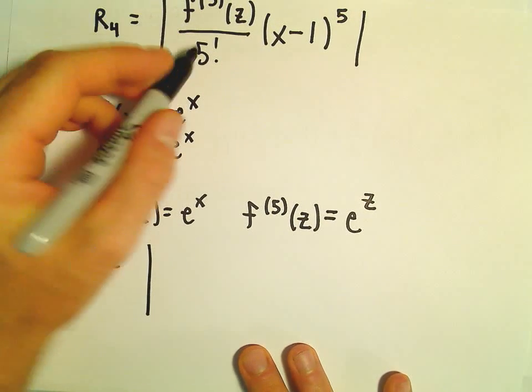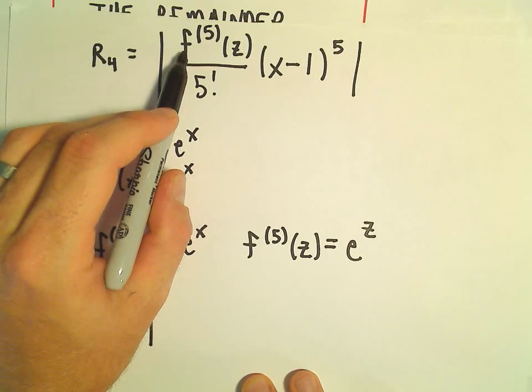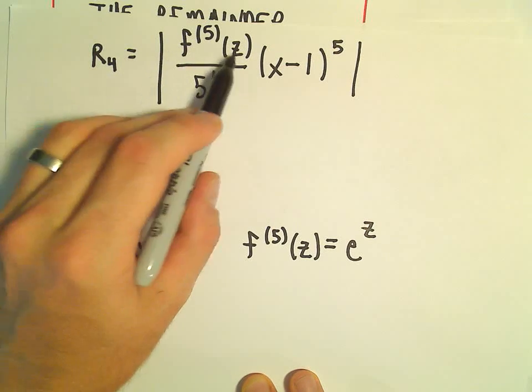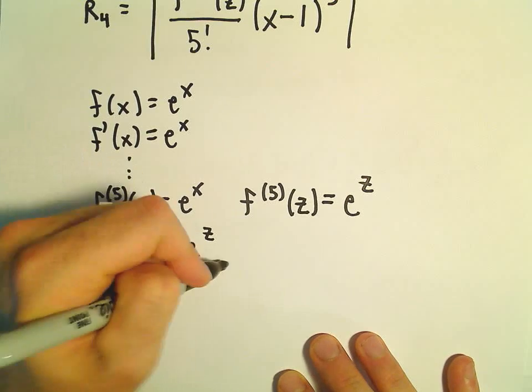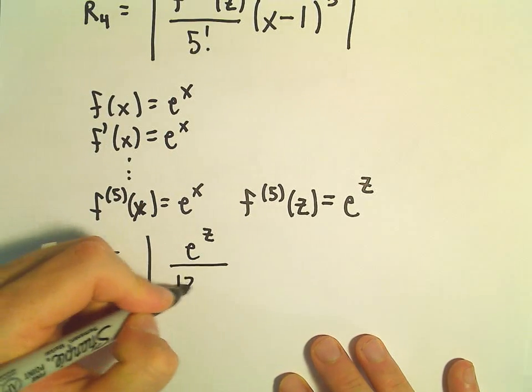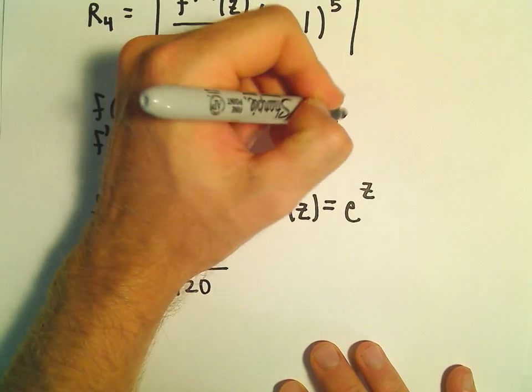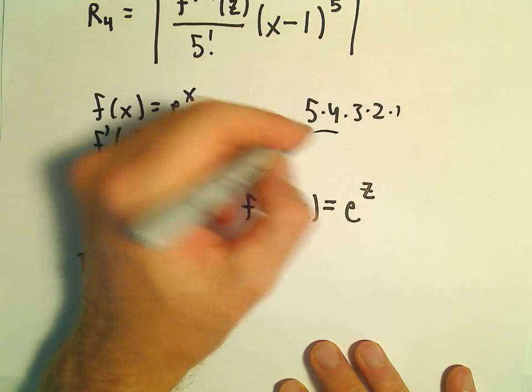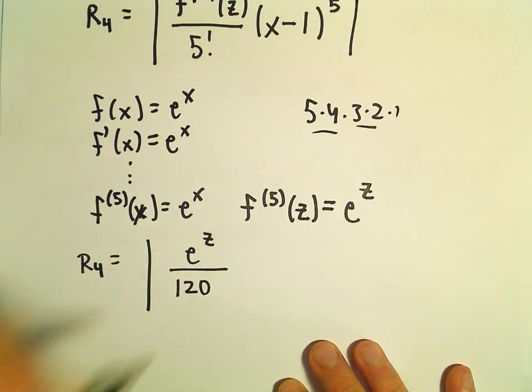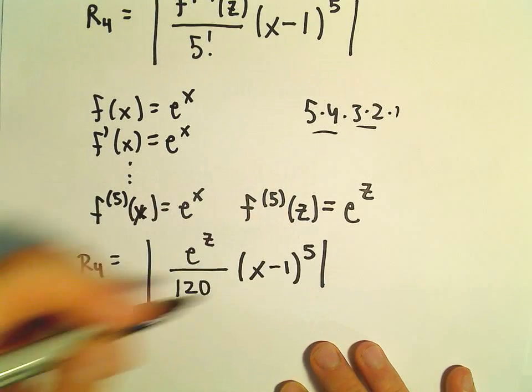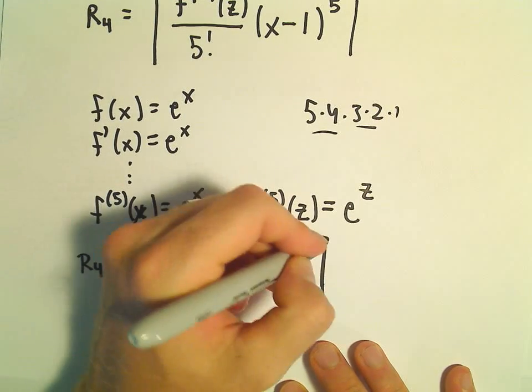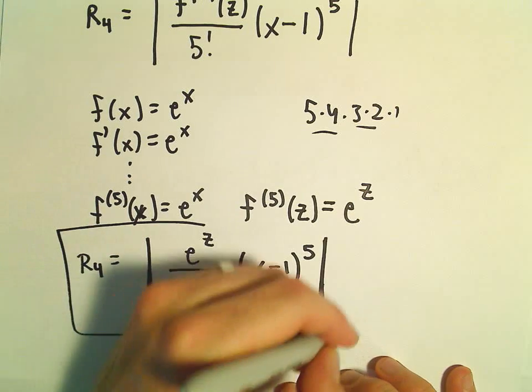So again, the 5th derivative of our function evaluated at z, that's going to be e to the z. 5 factorial, I believe that's 120, so 5 times 4 times 3 times 2 times 1, that's 20, and another 6, that's 120. Then we'll have x minus 1 raised to the 5th power, and that will now be an expression for our remainder.